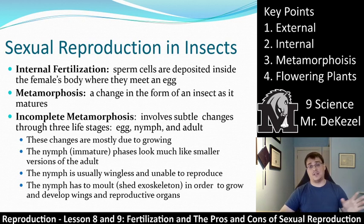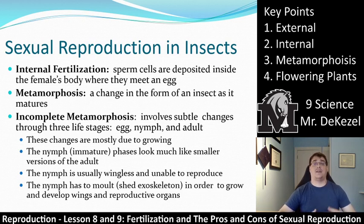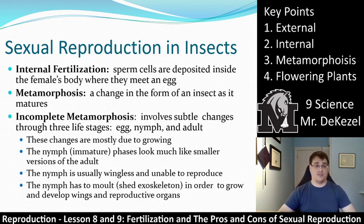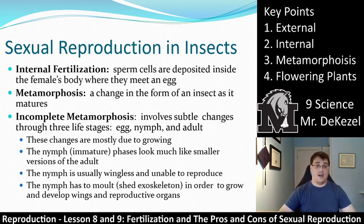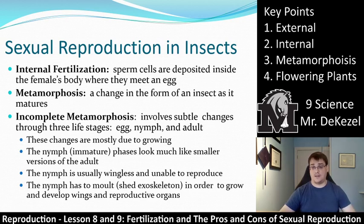Sexual reproduction has external and internal fertilization. Mosses and fish are examples of external fertilization. Insects, humans, dogs, and cats are examples of internal fertilization. And we talked about incomplete metamorphosis as it changes the look of an organism throughout its life cycle.